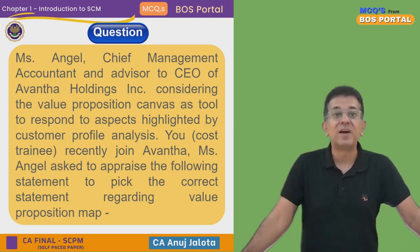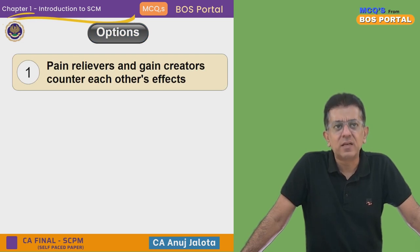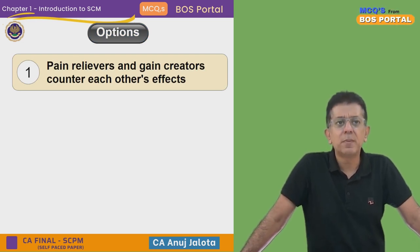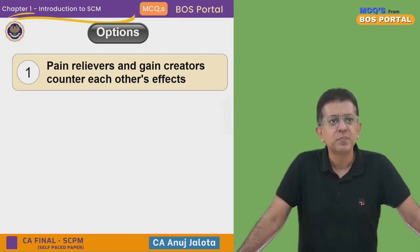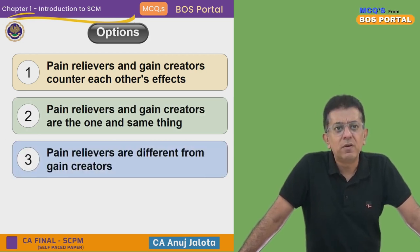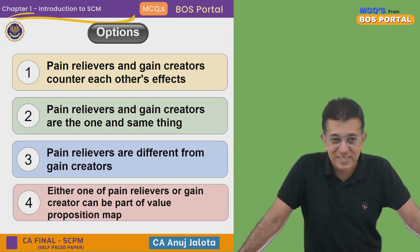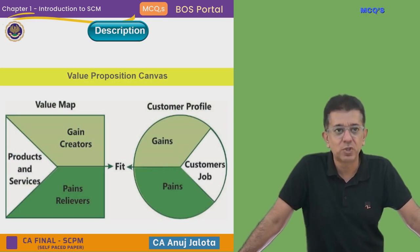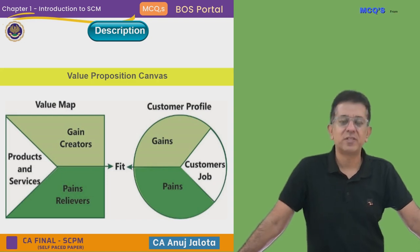This question is about picking the correct statement about the Value Proposition Map. Option one: pain relievers and gain creators counter each other's effects. Pain relievers and gain creators are actually part of the Value Proposition Canvas. Option two: pain relievers and gain creators are one and the same thing. Option three: pain relievers are different from gain creators. Option four: either one of the pain relievers or gain creators can be part of the Value Proposition Map — this one is fully wrong, as both are present on the left-hand side of the canvas.